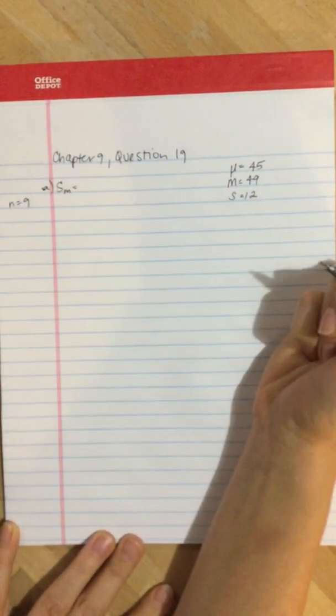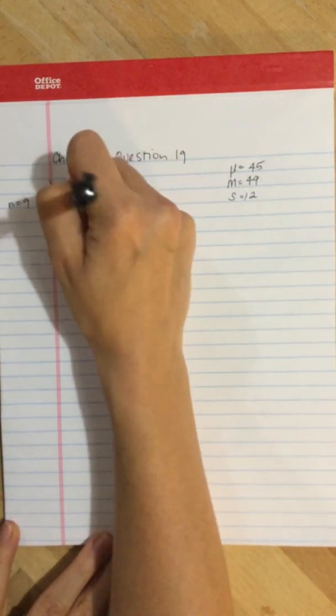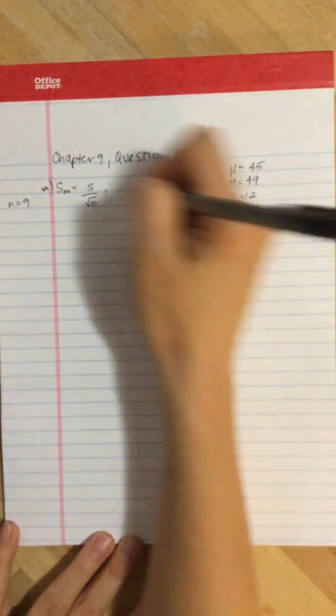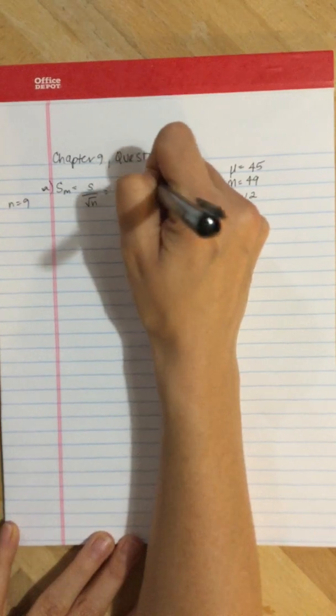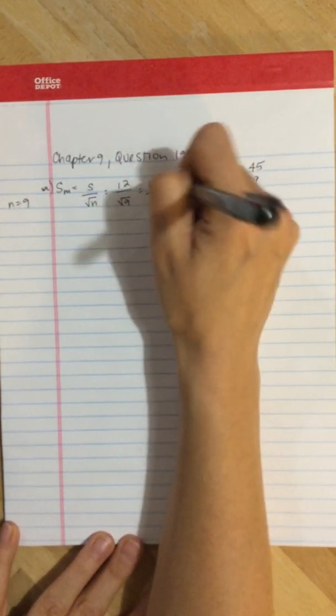For the estimated standard error, we take s divided by the square root of n. So, we take 12 divided by the square root of 9. 12 divided by 3 gives us 4.